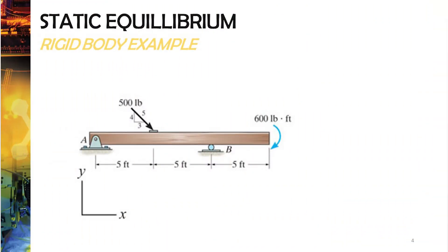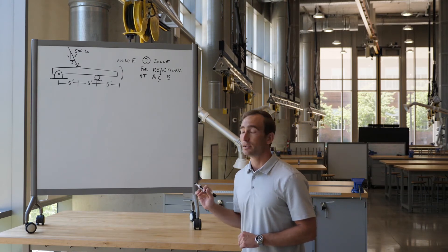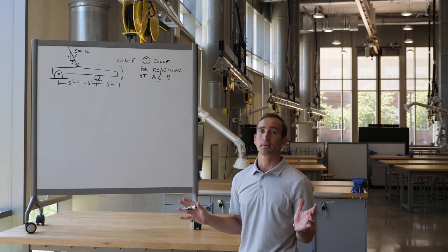Now we'll look at a 2D rigid body example problem similar to the ones we've just done. We have a pin support at A, a roller at B, and an inclined force in the middle. The key difference here is a new element we haven't seen yet — a point moment on the far right end of the beam. Before I show the solution, pause your video and at least draw a free body diagram of this example. Then I'll show you how to handle point moments in these problems.